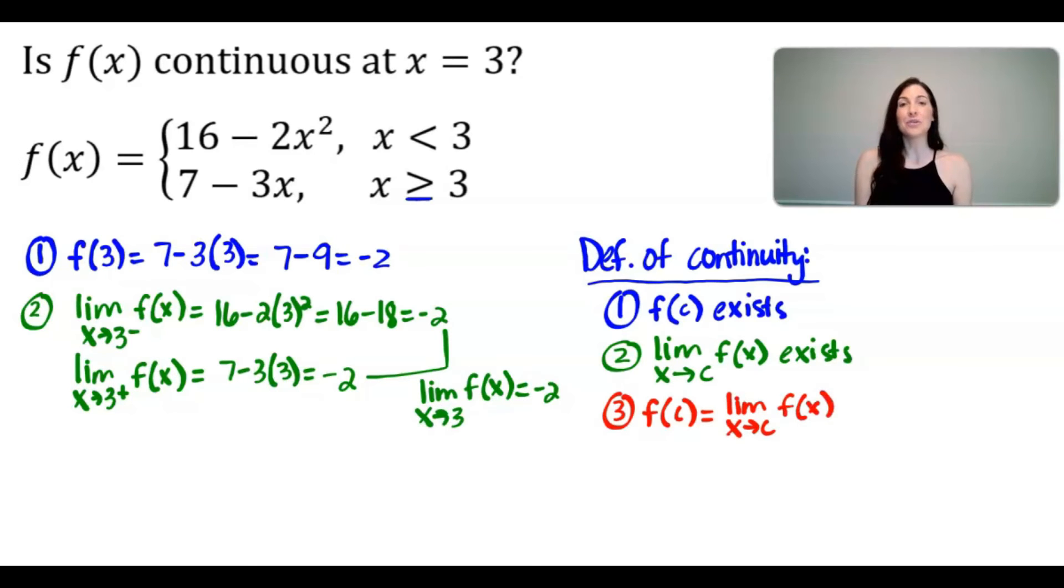So doing step 3 for our problem, we would have f of 3, which we got as negative 2, is in fact equal to the limit as x approaches 3 of f of x. Therefore we can conclude that f of x is continuous at x equals 3.